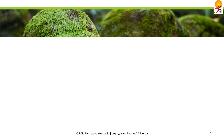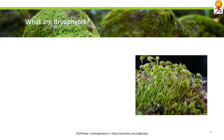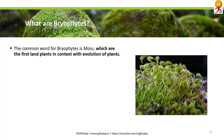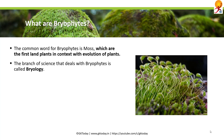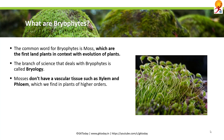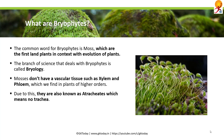Firstly, mosses. What are bryophytes? The common word for bryophytes is moss, which are the first land plants in context with the evolution of plants. The branch of science that deals with bryophytes is called Bryology. Mosses don't have vascular tissue such as xylem and phloem, which we find in plants of the higher order. Due to this, they are also known as atrachea, meaning no trachea.